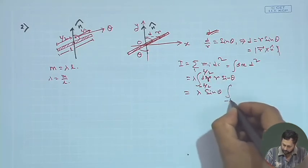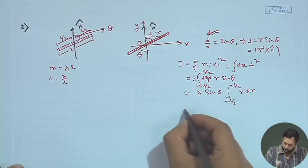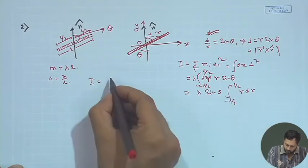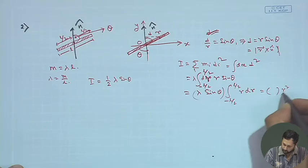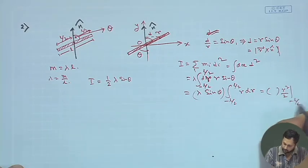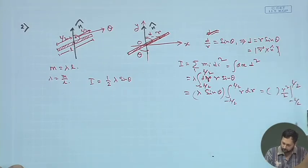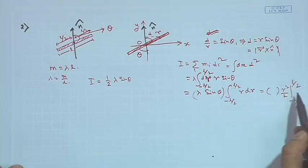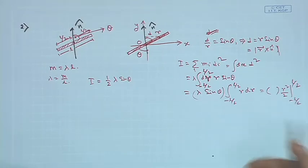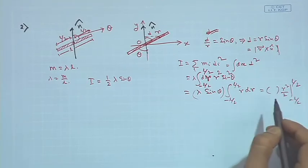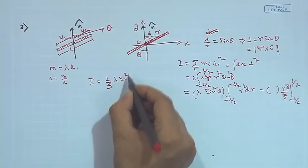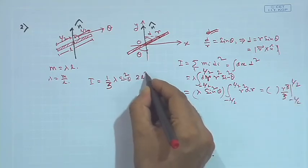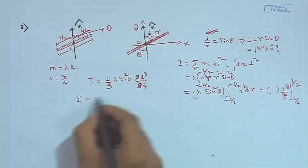The integral becomes ∫ from −L/2 to L/2 of λ r² sin²θ dr. Evaluating this, the integrand gives r³/3 evaluated at the limits, yielding 2L³/8. After simplification, combining λ = m/L, we get I = (1/12) mL² sin²θ.